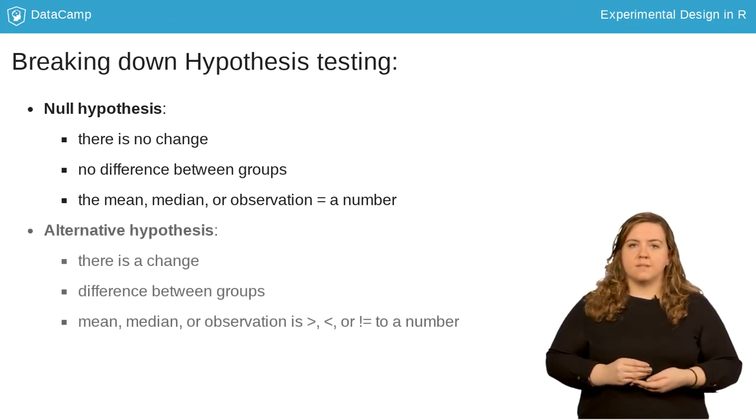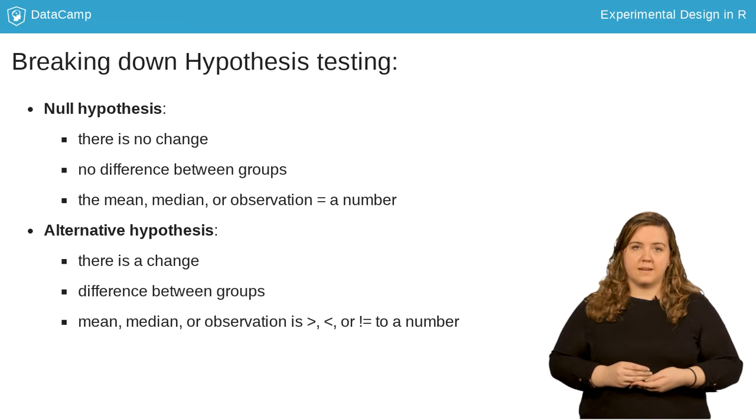There's some nuance involved in the alternative hypothesis, and its construction will help lead you to the correct test. If you're testing if the mean is only less than or greater than a value, like you did in the first exercise, it's a one-sided test. If you're testing that it's not equal to some number, that's a two-sided test.